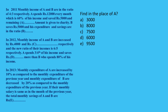First, we will ask A to answer. What amount is in the dash? In 2011, the monthly income of A and B is in the ratio 4 to 3. A spends 12,000 every month, which is 60% of its income. 60% as a fraction is 3 by 5.